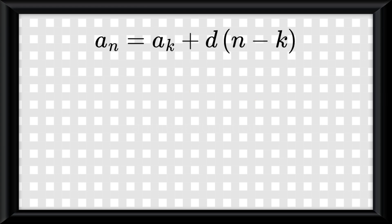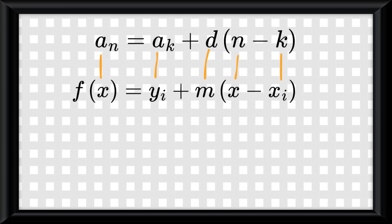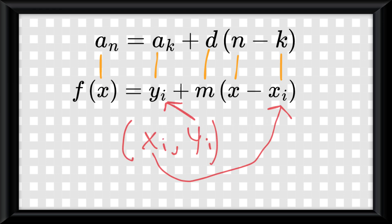The other equation, a sub n equals a sub k plus d multiplied by n minus k, could be expressed as another way of writing linear equations, being f of x equals y-sub-i plus m multiplied by x minus x-sub-i, where you include the point (x-sub-i, y-sub-i) in the equation.